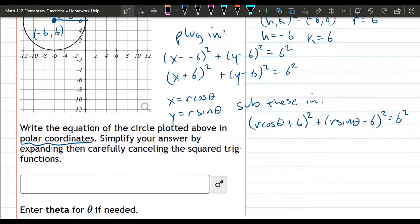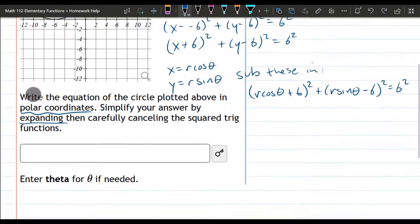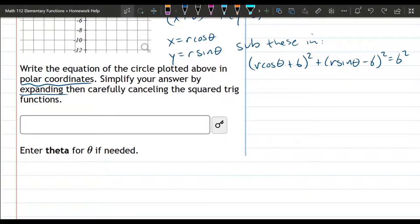All right, next it says simplify by expanding, meaning foiling, squaring these two terms, and then carefully cancelling the results. We're going to need a little bit more room, so let's go ahead and write it down here.